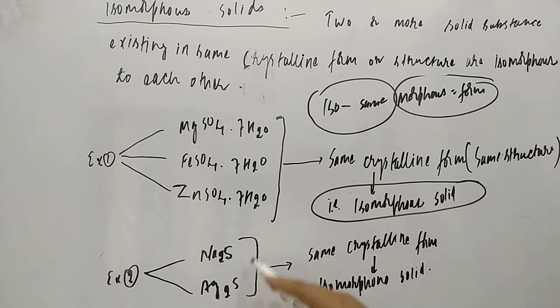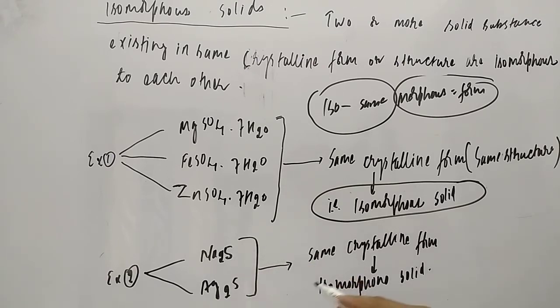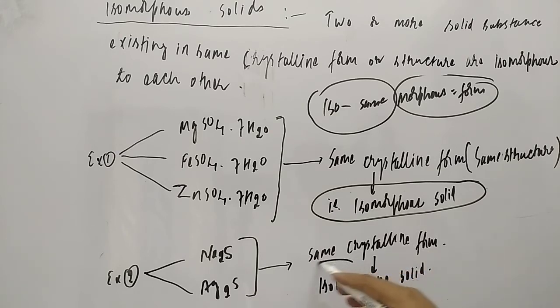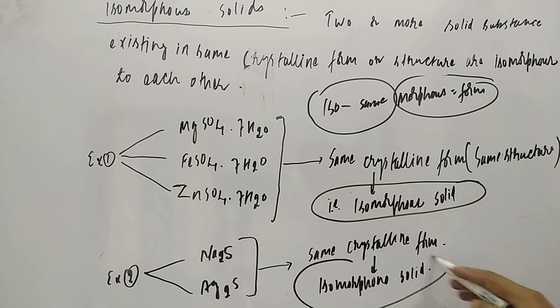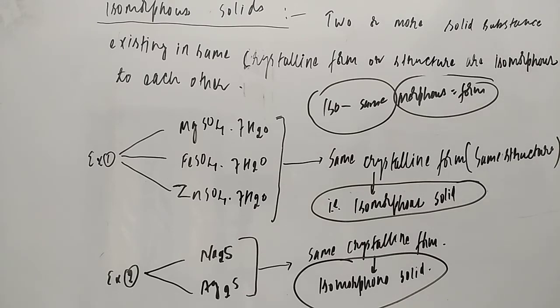The second example is Na₂S and Ag₂S. They are also having the same structure and the same crystalline form, so they are also known as isomorphous solids.